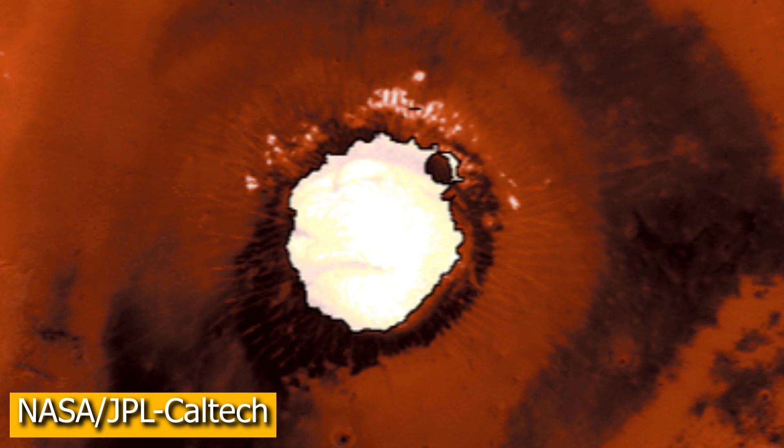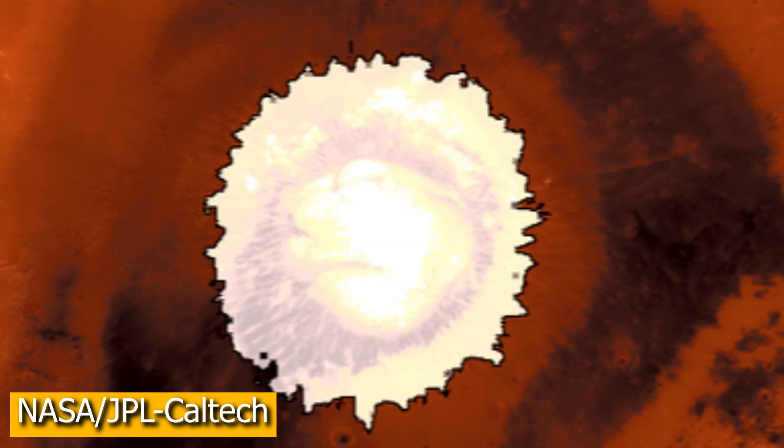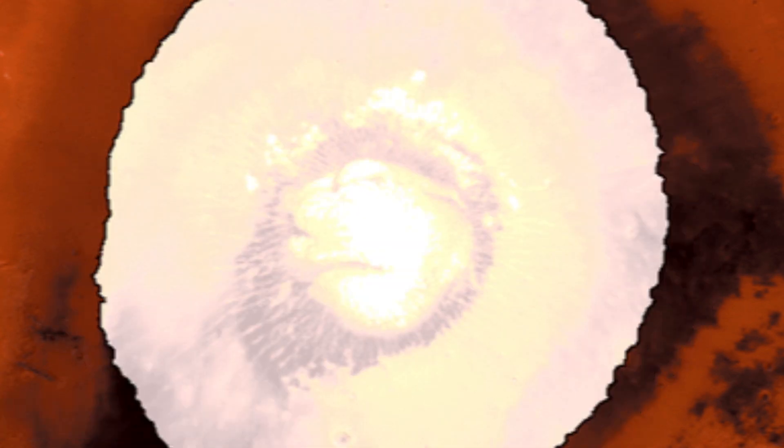So essentially, what we would expect to see is the northern pole or the northern ice cap to change in size greatly depending on whether or not it's summer or winter. And because of this, we can actually see a lot of changes happening on Mars.